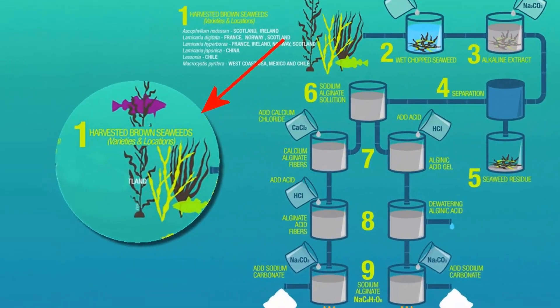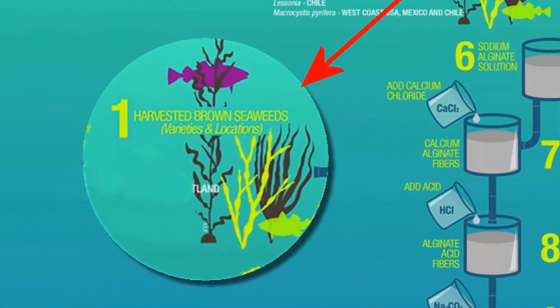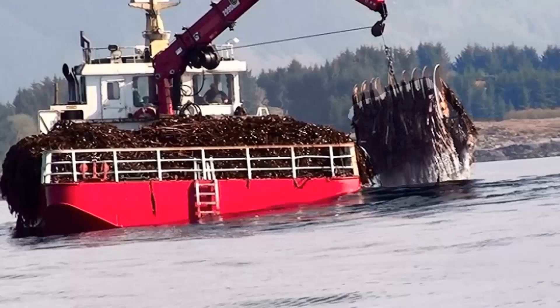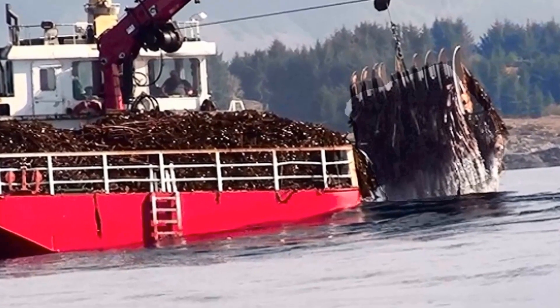The first step consists of the harvesting of the brown seaweed. It is then dried and chopped before it can be used. The seaweed can be gathered in the open sea using specially built ships or from seaweed farms, which have developed to conserve our ocean environment.